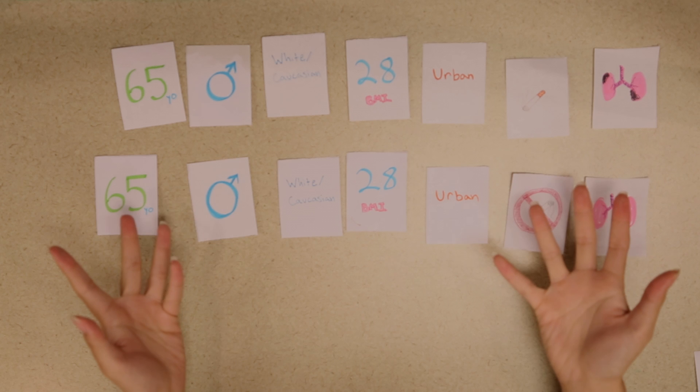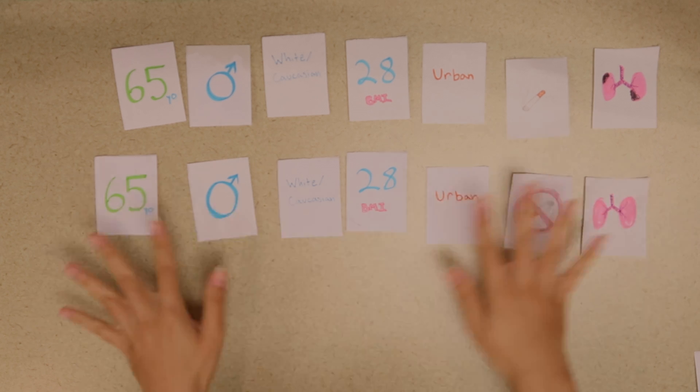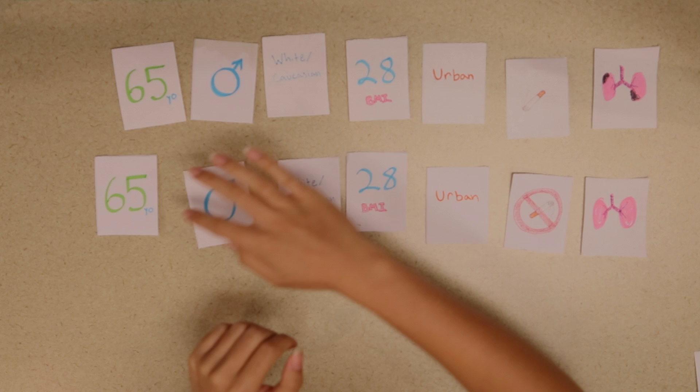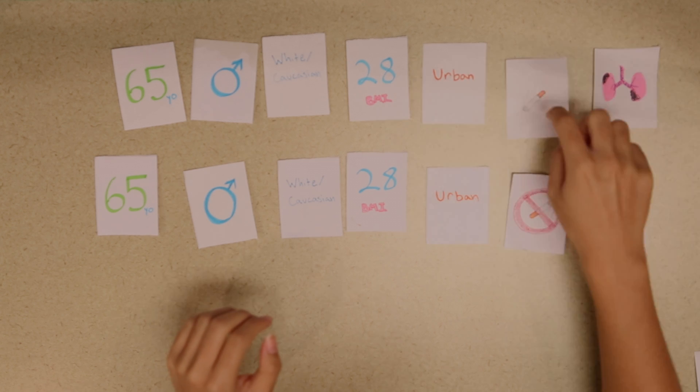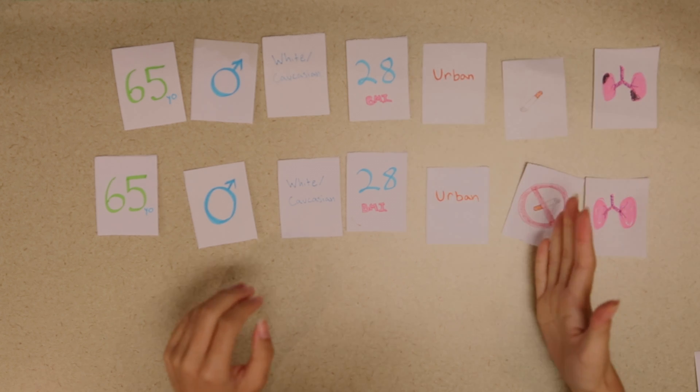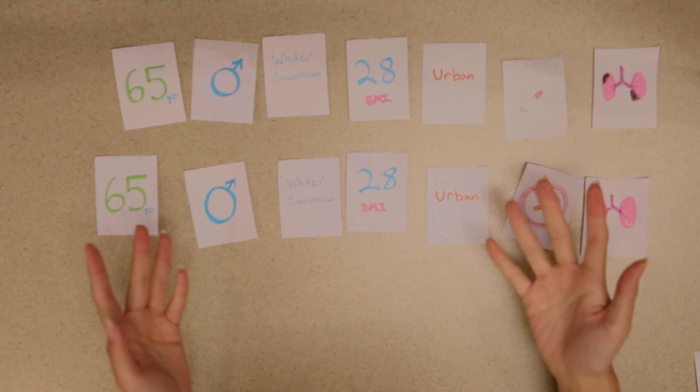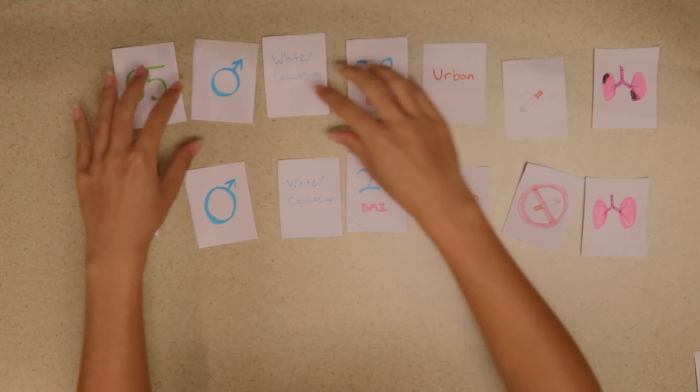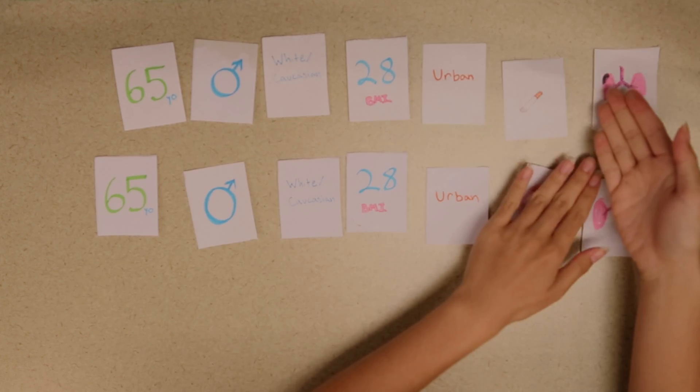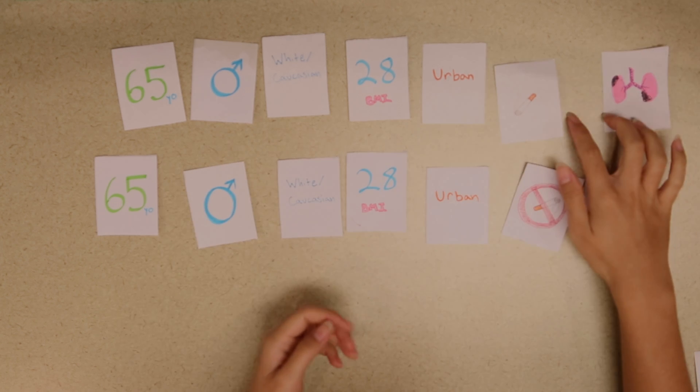So, propensity score matching is important because it helps avoid selection bias by making sure that two people have just an equal chance of getting one treatment versus the other. It helps us determine whether the results you're getting are due to one group being more inclined to getting the treatment versus the effect of the treatment itself.